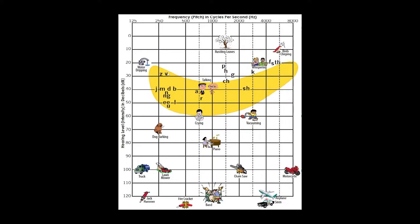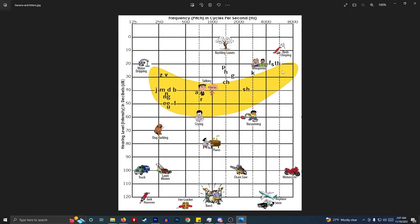This yellow area on the audiogram is called the speech banana, and it's where the letters of speech fall within the frequency spectrum. Something many people don't know is that your vowels — A, E, I, O, U — are lower-frequency sounds. Meanwhile, consonants like F, S, and TH are considered high-frequency sounds. This matters a lot: if you can't hear those high-frequency consonant sounds well, you're going to mix up words constantly.